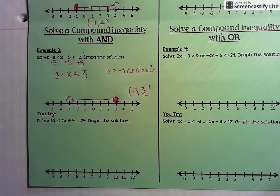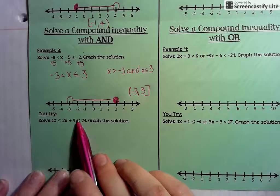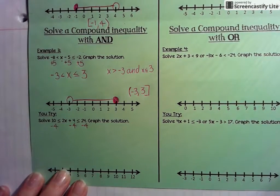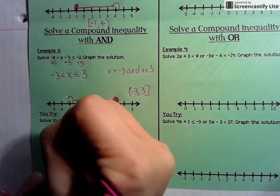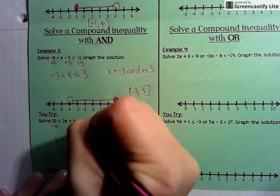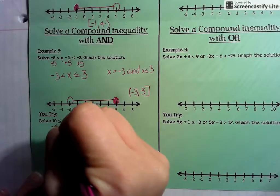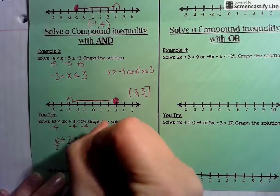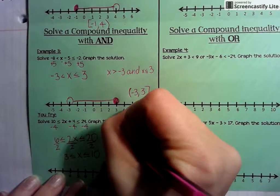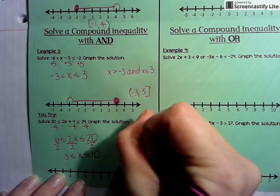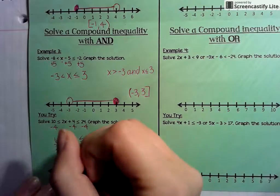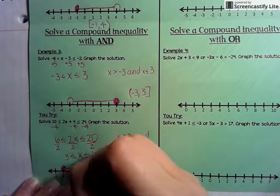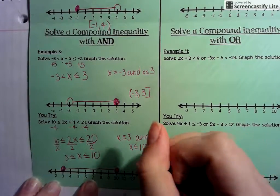For the last one, we have 10 is less than or equal to 2X plus 4 which is less than or equal to 24. First subtract 4 from all sides: 10 minus 4 is 6, so 6 is less than or equal to 2X is less than or equal to 20. Then divide all sides by 2: we get 3 is less than or equal to X is less than or equal to 10. We put a closed circle on 3 and a closed circle on 10, covering all numbers between them. The interval notation is bracket 3 comma 10 bracket.